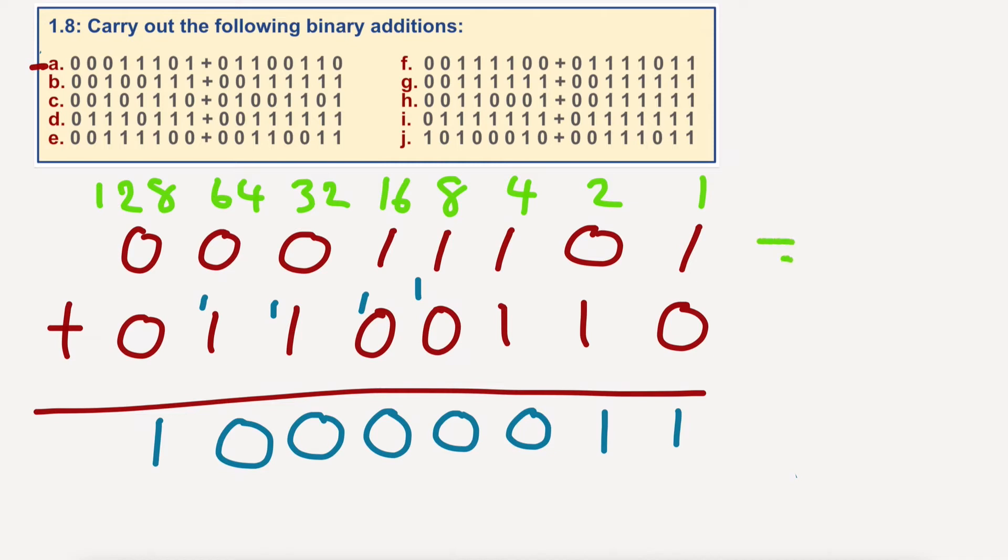So, if I go across the top and do this as base ten, I've got sixteen, plus eight, plus four, twenty-eight, plus one, twenty-nine. And I'm going to add whatever this is, sixty-four, plus thirty-two, ninety-six, one-hundred, plus four, one-hundred, plus two, one-hundred and two.